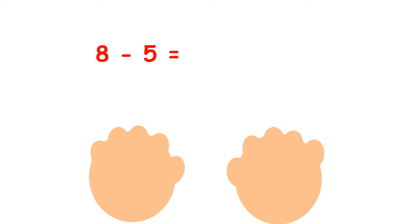So let's count forwards. We say 5 before we put any fingers up, because that's our smaller number. And then we count on 6, 7, 8.